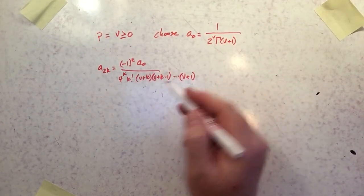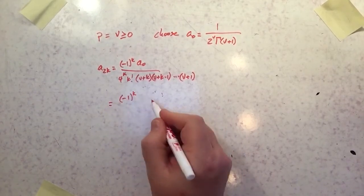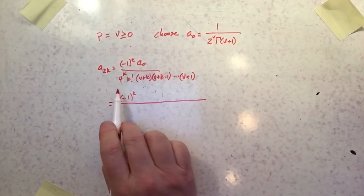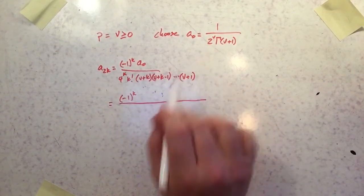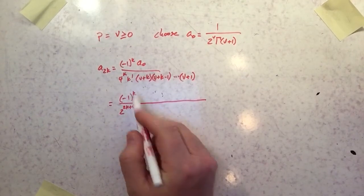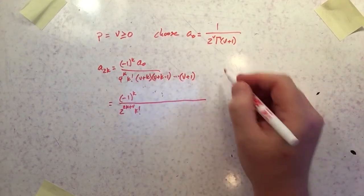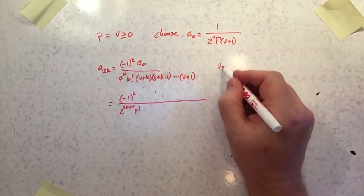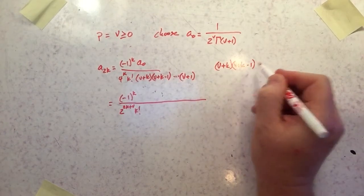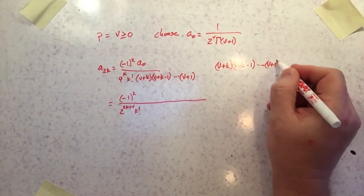So what I want to do is make the replacement. So now we've got negative 1 to the k. And then instead of a0, I'm going to put all that stuff in the denominator. So it'll be 2 to the 2k plus v. It'll still be k factorial. And then all this junk, v plus k times v plus k minus 1, that's going to go all the way down to v plus 1 as the last term. And then I've multiplied it by gamma of v plus 1.